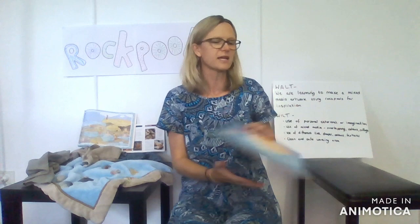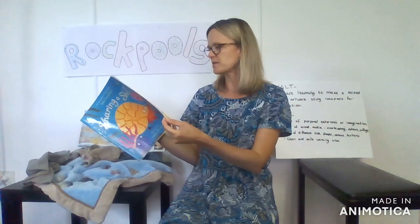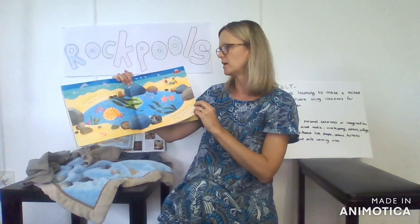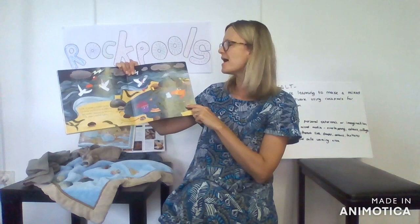So this week in literacy we've been reading the book Sharing a Shell, and I wanted to draw your attention to the illustrations in this book. Here where our little crab is coming into the rock pool, what kind of colours does the picture show? They're really bright and colourful. And when we get to this page there's a storm happening. How are the colours different on this page? It feels gloomier, doesn't it? The darker colours show that it's gloomier.